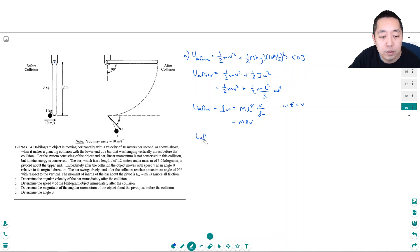L after... And this one you can compute. Because this is 1 kilogram times L, 1.2 meters, times V, which is 10 meters per second. This is equal to 12 kilogram meters squared per second.